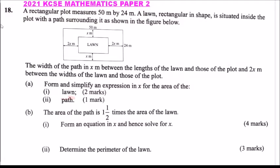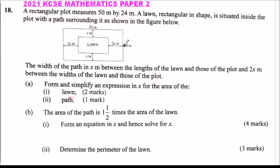Question number 18. We are told a regular plot measures 50 by 24 meters. A lawn, rectangular in shape, is situated inside the plot with a path surrounding it, as shown in the figure. The length is 50 meters, the width is 24 meters. The path width is x meters between the length of the lawn and the plot, and 2x meters between the width of the lawn and the plot.